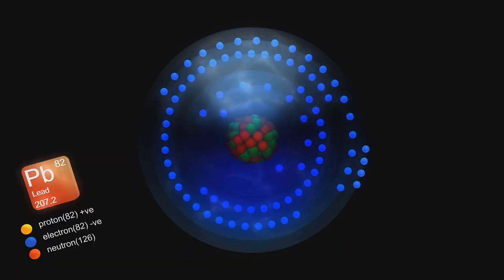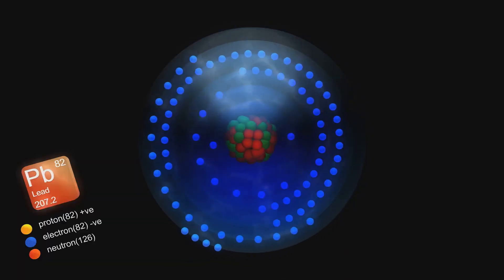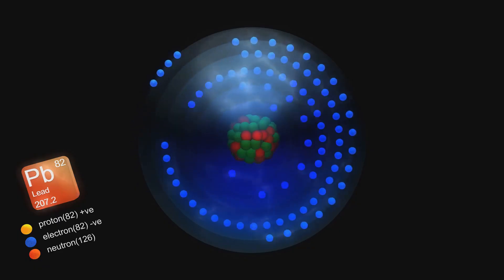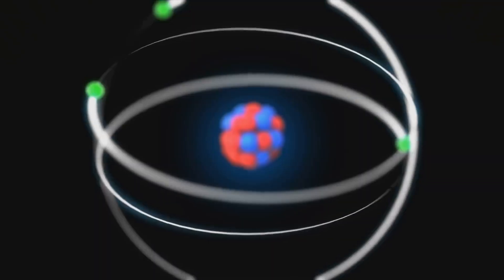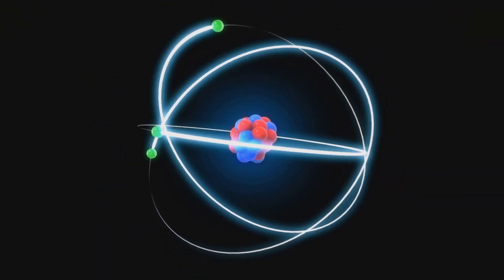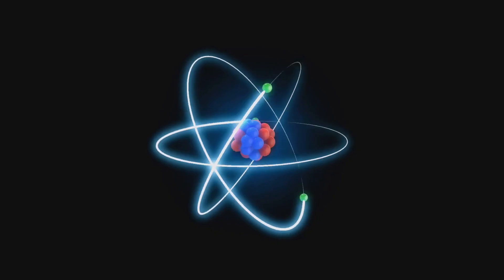Instead of smashing these atoms head-on, the ALICE experiment engineers what they call near-miss collisions. These glancing blows don't rip the atoms apart, but instead create mind-blowing electromagnetic fields. These fields are so intense that they can nudge bits out of the nuclei themselves.